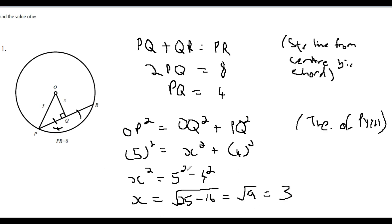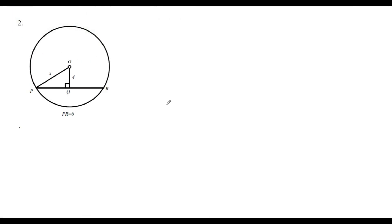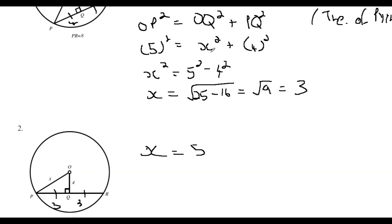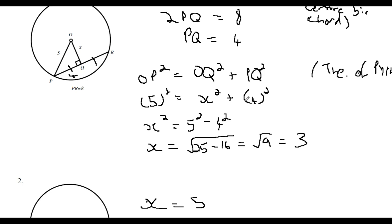Another quick example — basically the same thing. PR is given as 6, so by our theorem each half equals 3. We then have sides 3 and 4, and using Pythagoras x equals 5. That's the 3-4-5 Pythagorean triple. You still need to show all working for your marker — everything is the same as before, just with 6 and 3 substituted in.